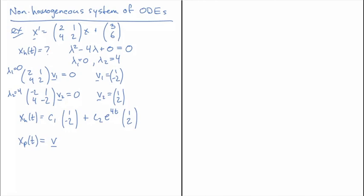We have a bit of a problem here, and that is that we have a vector (3; 6) that is a constant vector, and we also have that the homogeneous solution, which is X prime equals (2, 1; 4, 2) times X, will have a constant vector that's a solution to it.